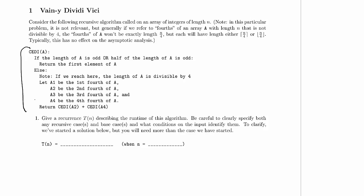It says, however, that's not actually an issue on this particular problem. So then our algorithm is KD of A. It takes in an array A, and what does it do? If the length of A is odd or half of the length of A is odd, we return the first element of A.